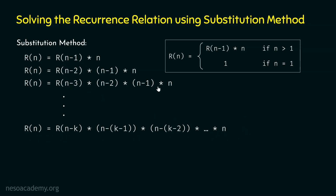As we have observed the pattern, we can easily write this generalized expression. R(n) = R(n-k) × (n-k-1) × (n-k-2) × ... × n. Now, we know R(n-k) represents the return value of fact of n minus k. Let's assume fact of n minus k is the last recursive call, and hence the base case must be satisfied.